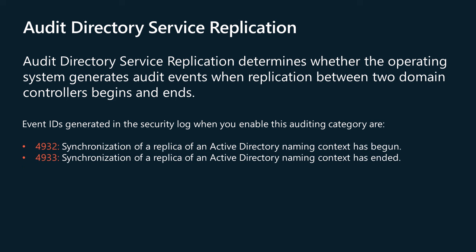The Audit Directory Service Replication policy determines whether the operating system generates audit events when replication between two domain controllers begins and ends. Events in this subcategory typically have an informational purpose and it is difficult to detect any malicious activity using these events. Events generated from this policy are mainly used for troubleshooting Active Directory replication. Events in the security log related to this auditing item include: 4932, synchronization of a replica of an Active Directory naming context has begun; 4933, synchronization of a replica of an Active Directory naming context has ended.